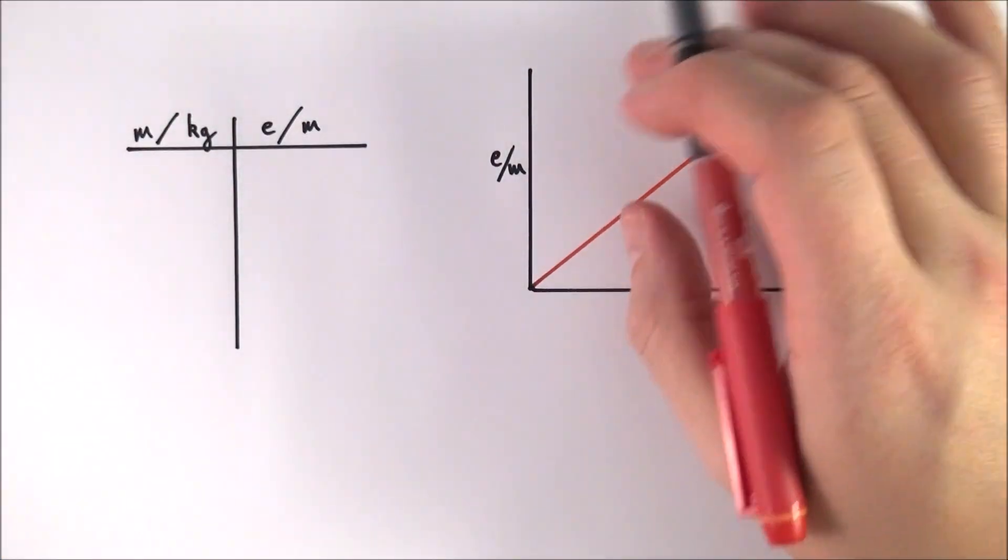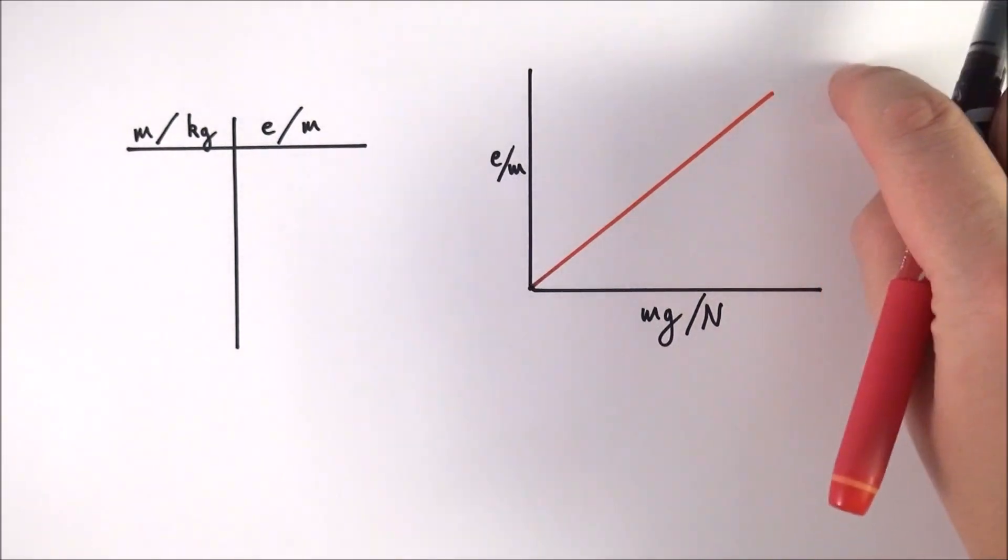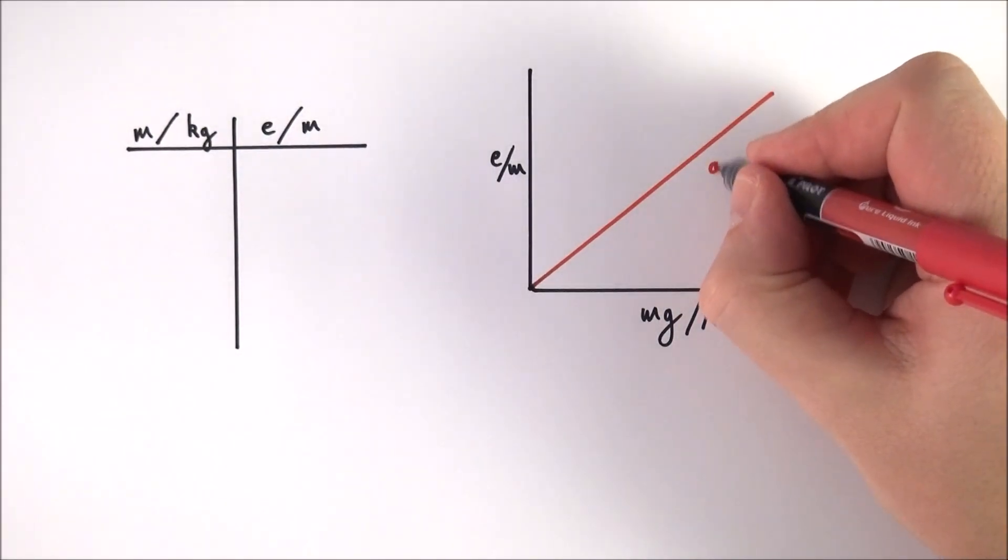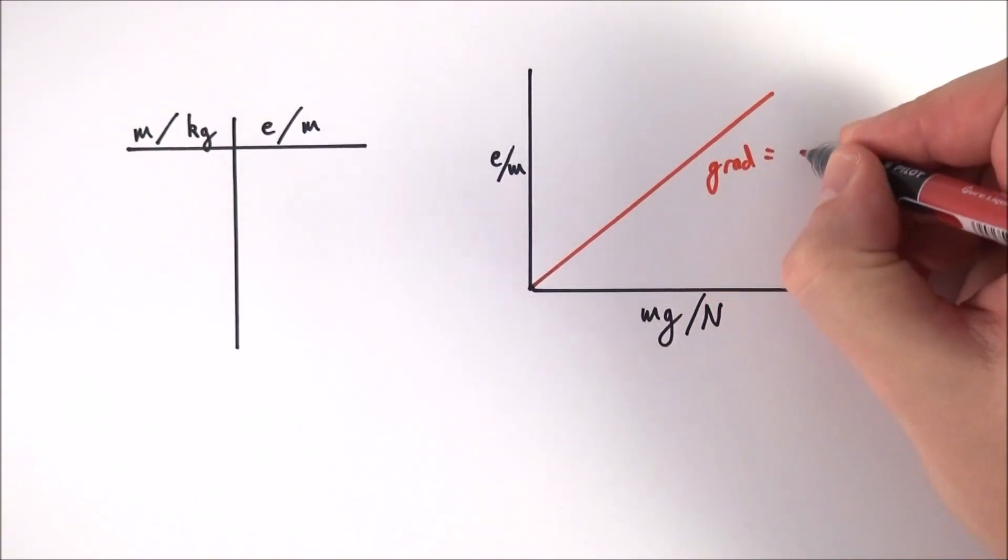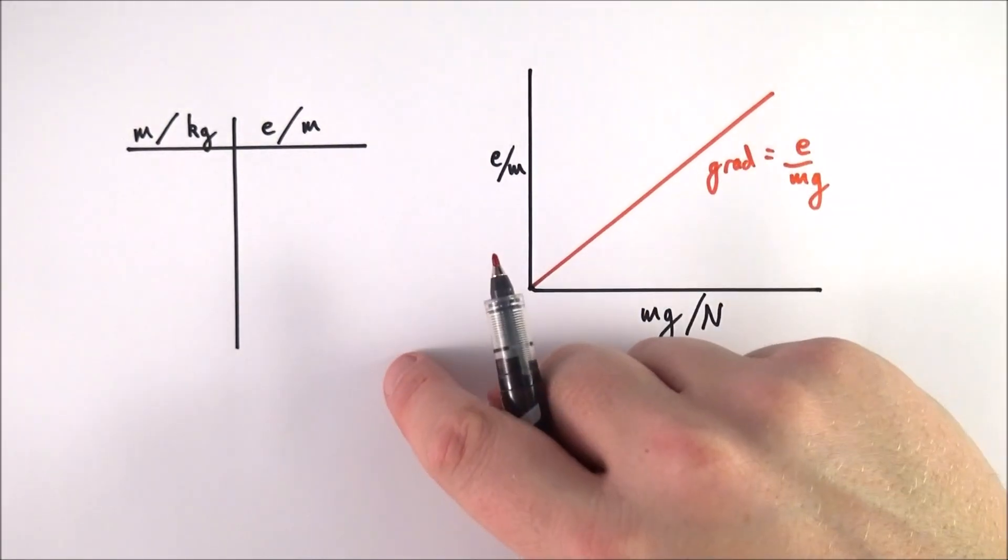Well when you've got a nice straight line here and you want to avoid any bits at the top where it's starting to go into this kind of plastic deformation, you should realize that the gradient is equal to e over mg and you can use this gradient that you've just calculated to work out Young's modulus.